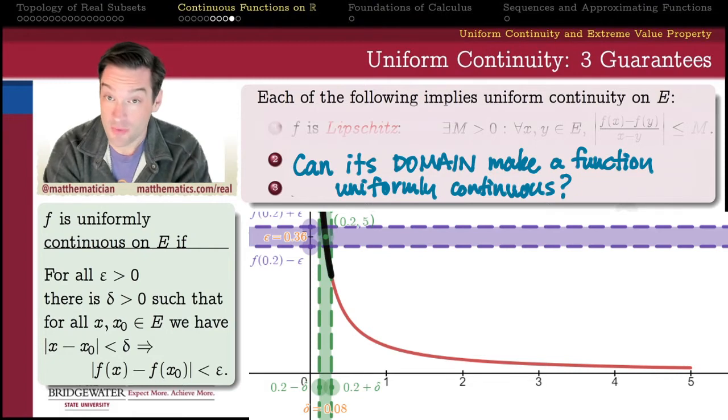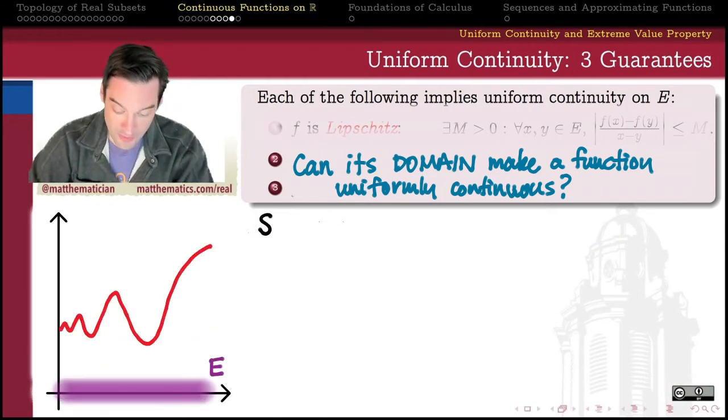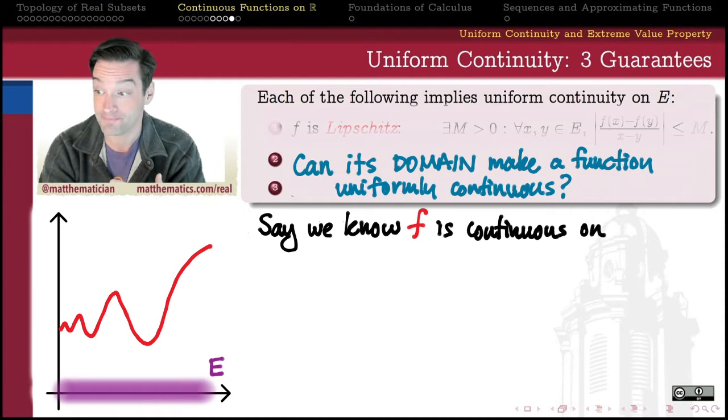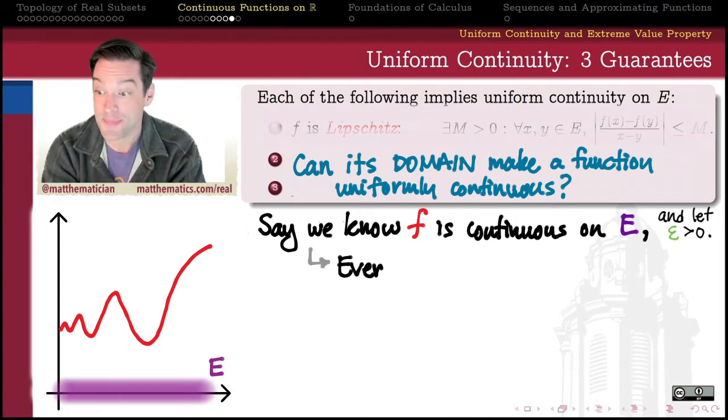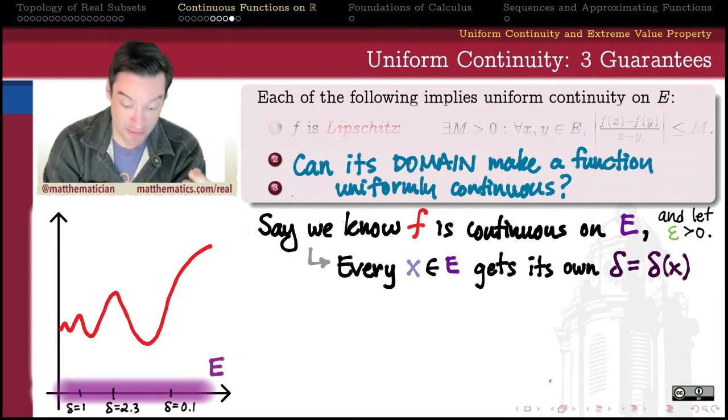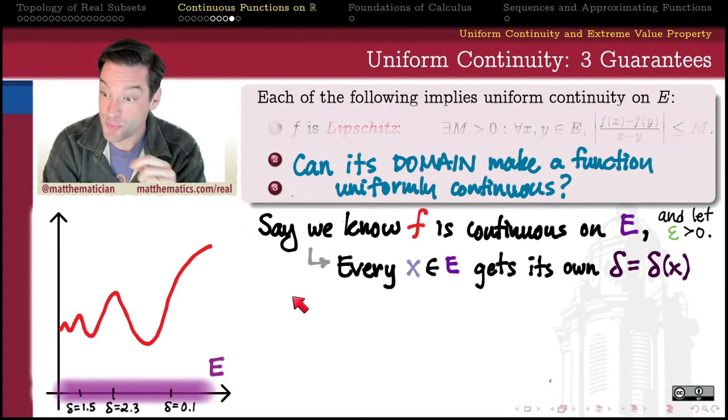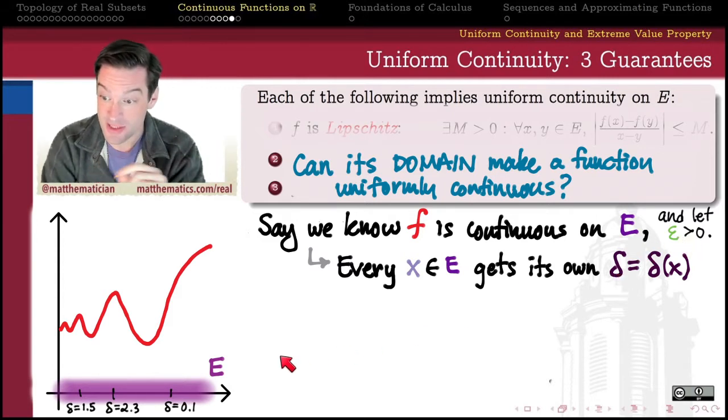So how can the domain of a continuous function force that function to be uniformly continuous? Well, let's suppose that we happen to know up front that our function is already continuous on a domain E. So continuity is something we'll take for granted. That means that if you pick an epsilon greater than zero for me, then I can go to any point in the domain of my function and at each of those points find its own delta, such that all of the points that are delta close to that x will have their images epsilon close to that f of x.